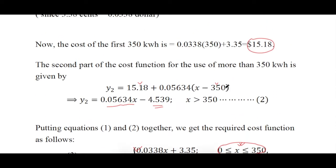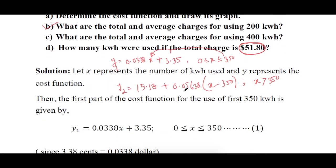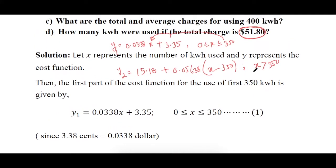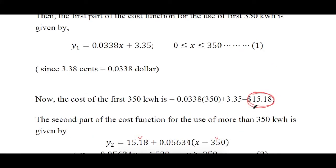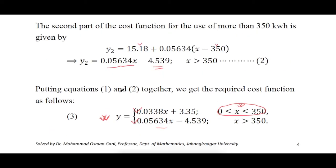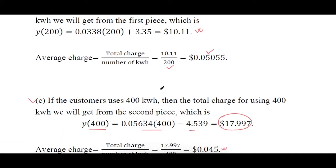Now you need to calculate the number of kilowatt hours when a total charge is given. You must decide which function to use. The maximum charge for up to 350 kWh is $15.18, so if the given amount exceeds that you use the second function: y = 0.05634x − 4.539. Substituting the given y value will give you the number of kilowatt hours.